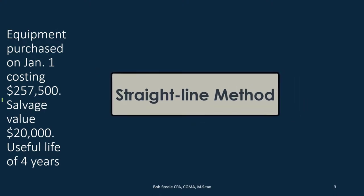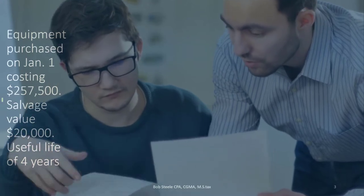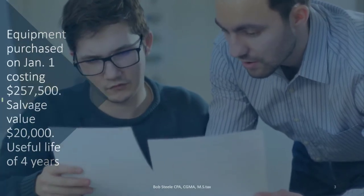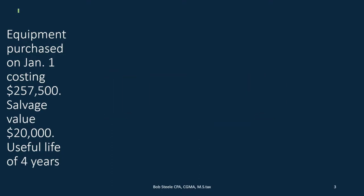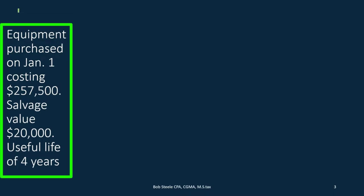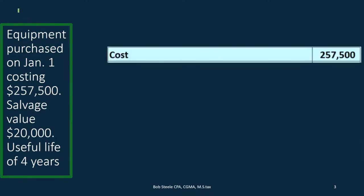We're going to start off with the straight line method, which if you were to ask someone how to solve this type of problem, this would be the first method that would probably come to most people's minds. It's very commonsensical and makes sense. In this case we have a purchase of equipment on January 1st costing $257,500, salvage value $20,000, and useful life of four years.